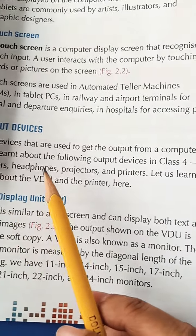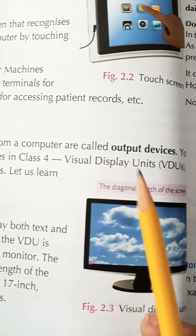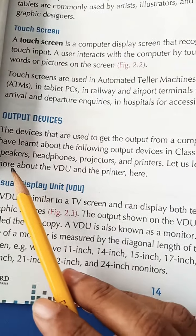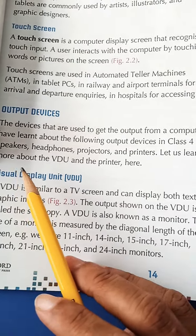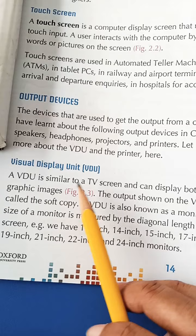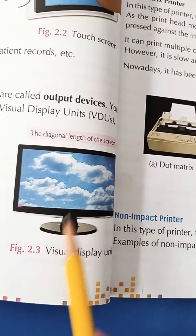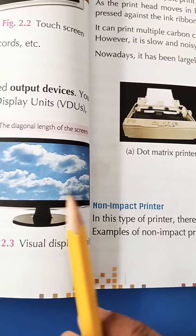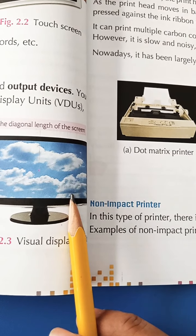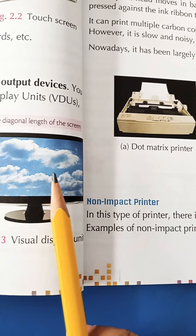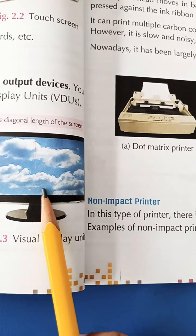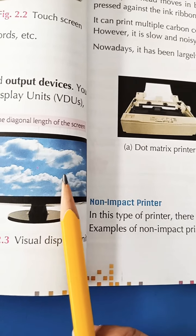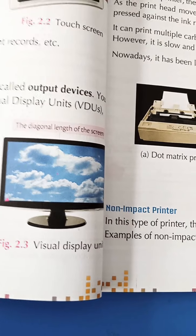Now, come to output devices. The devices that are used to get the output from a computer are called output devices. You have learned about the following output devices in class 4. Visual display unit, VDU, speakers, headphones, projectors and printers. Let us learn more about the VDU and the printer here. VDU, visual display unit. This is a visual display unit.